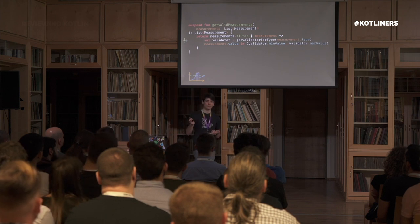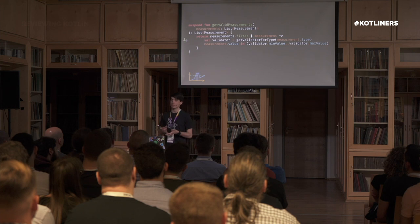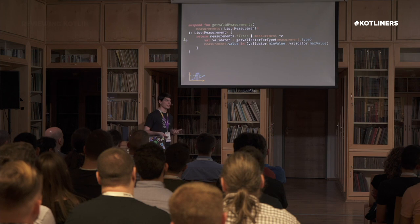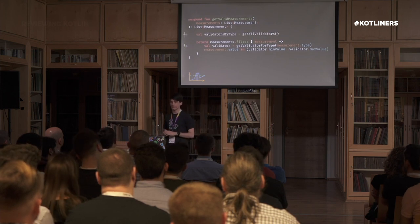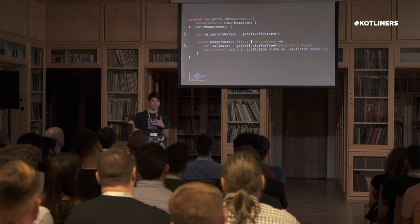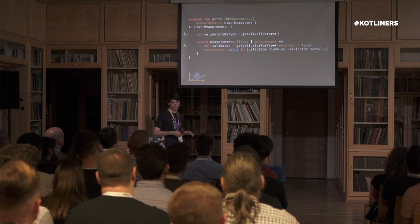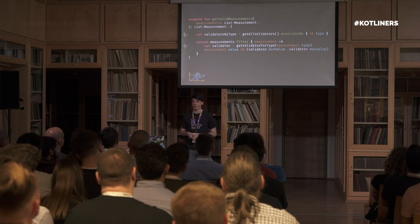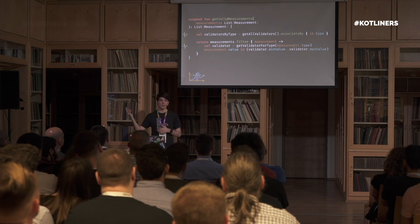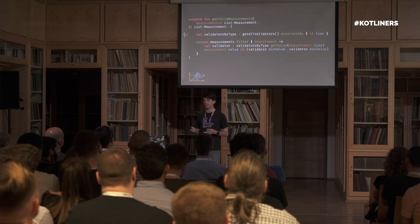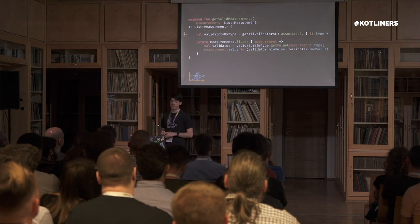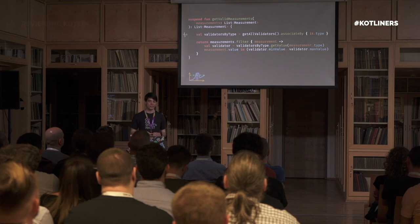This would be very, very hard to implement accidentally if you were using a callback-based API — this is the sort of mistake that would be very hard to make, but with coroutines it's very easy. After discovering this, the solution is quite simple: we were just prefetching all of the validation data before this loop. We associated each validator with the type of measurement it can validate, giving a map from measurement types to corresponding validator instances. Finally, instead of going out to the network within the loop, we were just doing a lookup within the map, which is essentially free in comparison.